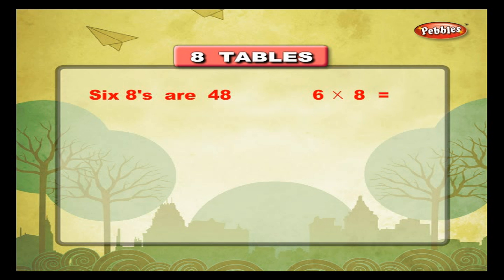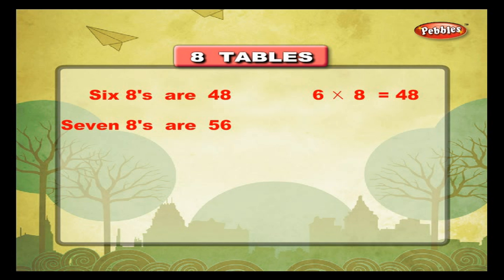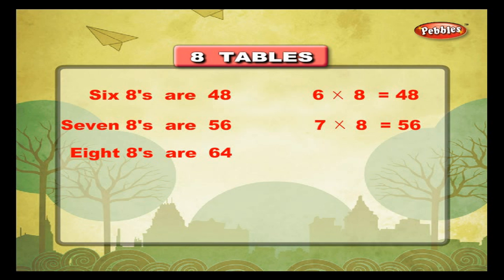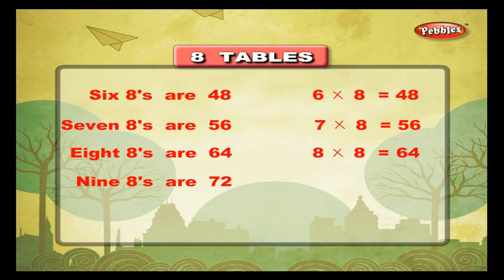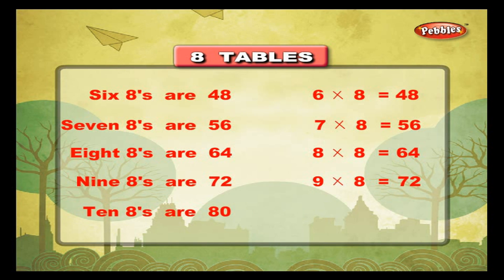6 eights are 48, 6 into 8 is equal to 48. 7 eights are 56, 7 into 8 is equal to 56. 8 eights are 64, 8 into 8 is equal to 64. 9 eights are 72, 9 into 8 is equal to 72. 10 eights are 80, 10 into 8 is equal to 80.